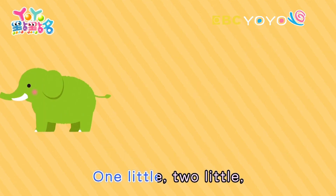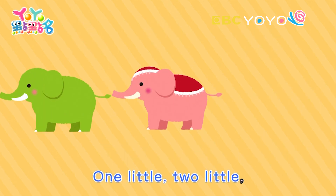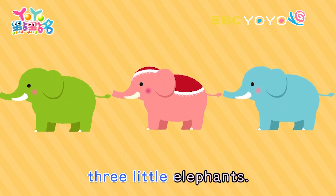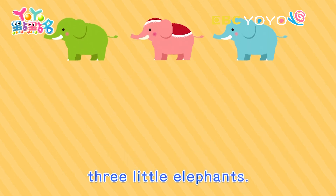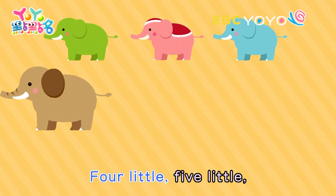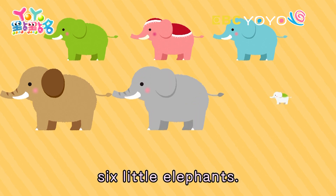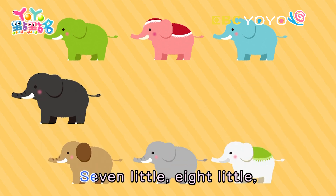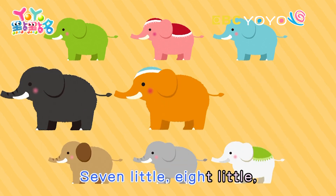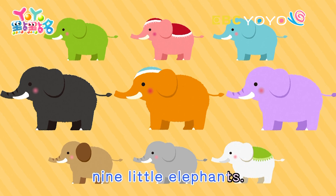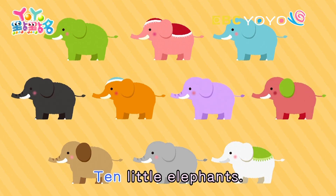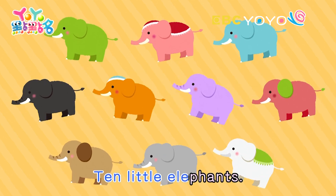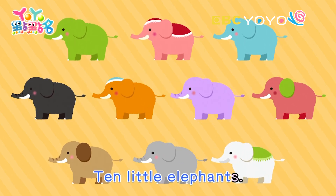One little, two little, three little elephants. Four little, five little, six little elephants. Seven little, eight little, nine little elephants. Ten little elephants.